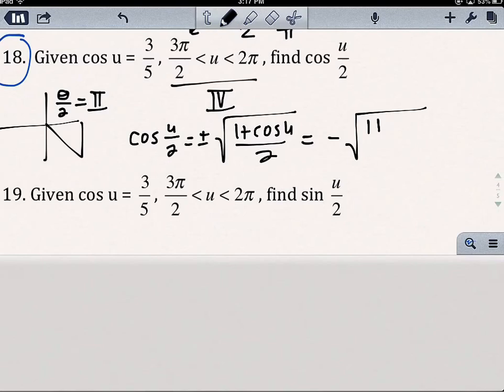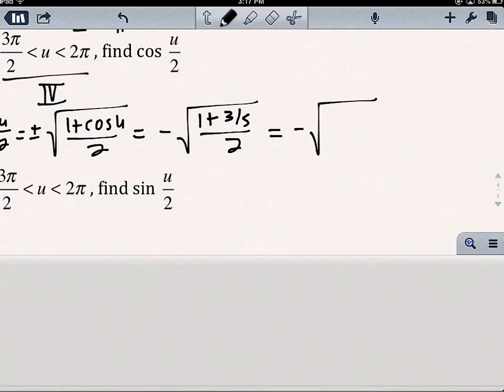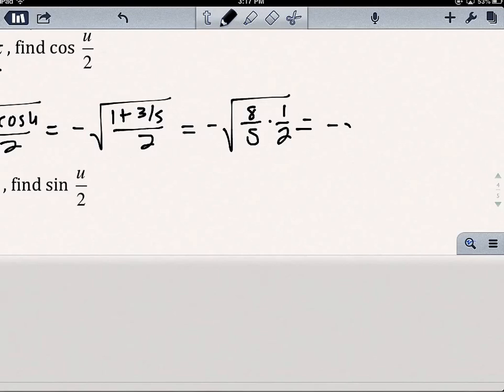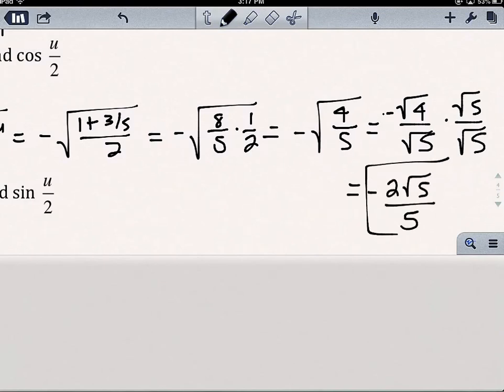Okay, so it's going to be (1 + 3/5)/2. 1 + 3/5 is 8/5 times 1/2. That's going to be 4/5, because my 4 and my 2 reduce. I need to square root both of these. And I know I cannot have that √5 in the denominator, so I need to multiply by √5/√5. So, I get -2√5/5.